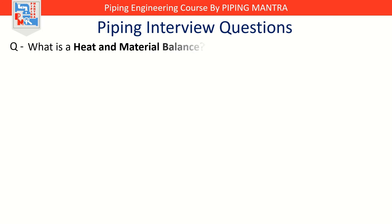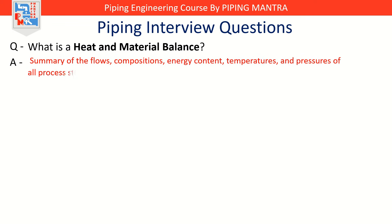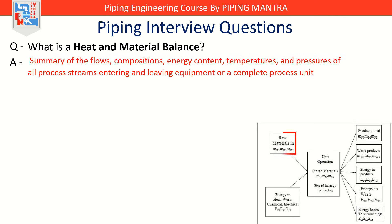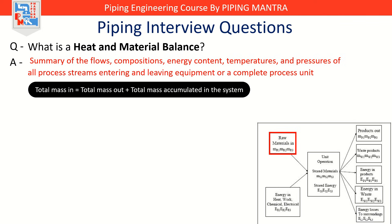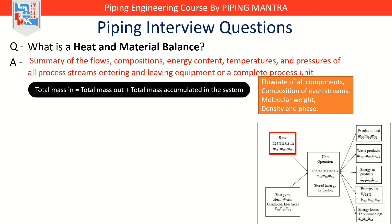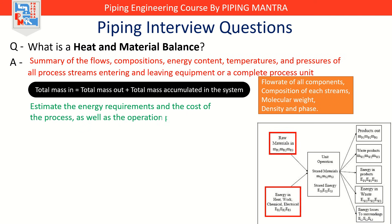That brings us to a tool that process engineers cannot live without — the Heat and Material Balance. What is the heat and material balance, or HMB? A heat and material balance is like the financial statement of a process — instead of tracking money, we track mass and energy. It is a quantitative summary of the flows, compositions, energy content, temperatures, and pressures of all process streams entering and leaving equipment or a complete process unit. The mass balance equation is: total mass in equals total mass out plus total mass accumulated in the system. In mass balancing, we look at flow rate of all components, composition of each stream, molecular weight, density, and phase. In fact, no process will work unless the heat balance is met.